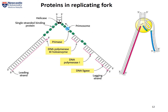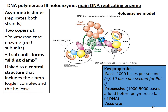In reality, the replication fork will not look as simple as this — it is slightly more complicated. In nature, the lagging strand will form a loop so that both DNA polymerase III on the leading strand and lagging strand can work towards the same direction. DNA polymerase III actually forms a holoenzyme complex which consists of two groups of subunits: one for the leading strand and another one for the lagging strand.